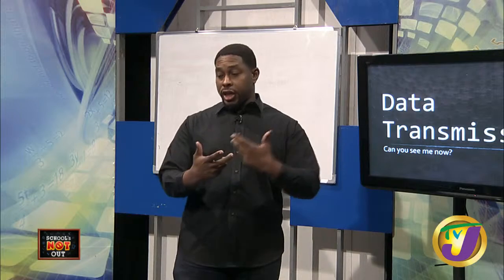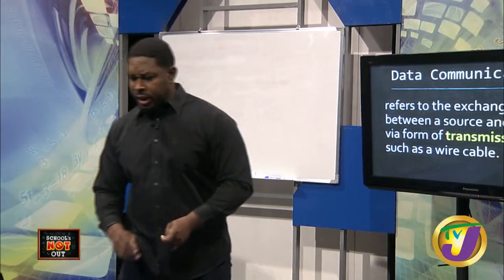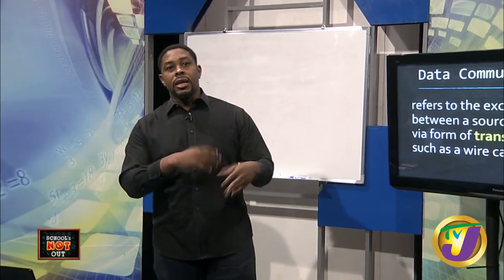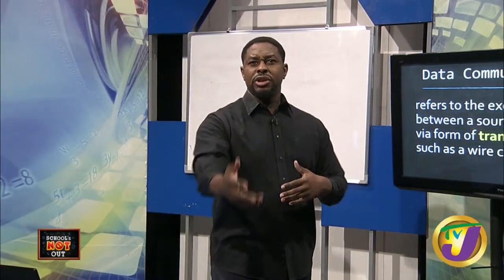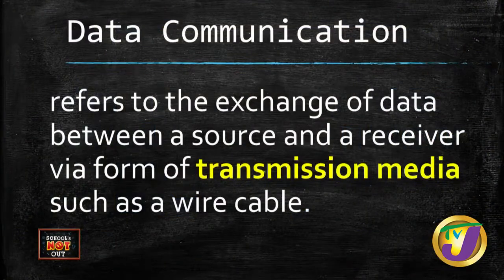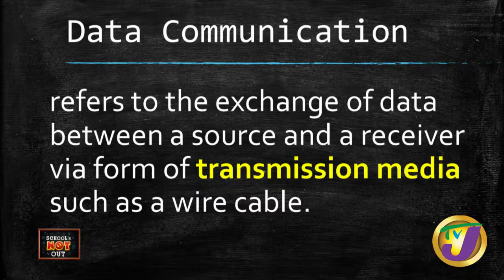There was a need for communication, and unfortunately we tend to interchange the definitions of transmission and communication, but they tie in with each other. To start, let's look at a formal definition for data communication, which essentially means the exchange of data between a source and a receiver via some kind of transmission medium. The transmission medium can be anything — air, wires, whatever the case may be.